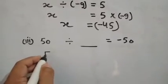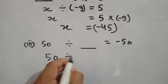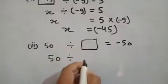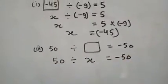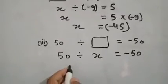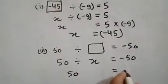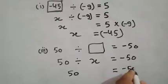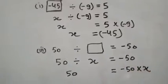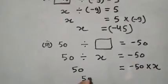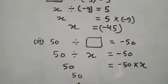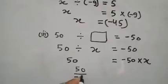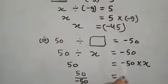So student, again take the value of missing part be X. Divisor is X equal to minus 50. Then 50 is equal to X times minus 50. Multiply goes toward left side, 50 divided by minus 50 is equal to X.